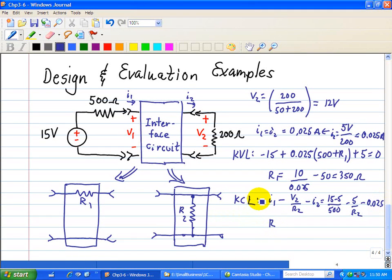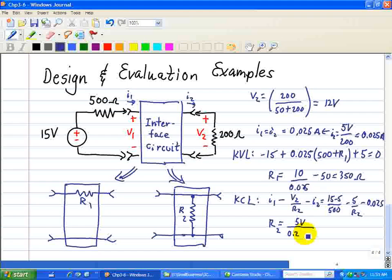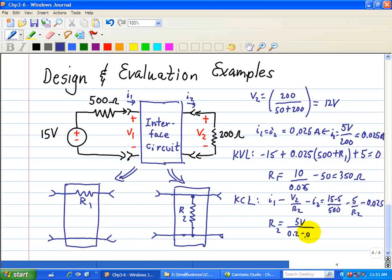Now we solve for R2, and we have 5 volts divided by 0.2, that's due to this term here, minus 0.025, which equals 28.57 ohms. You can see that the resistor R2 is much smaller than the resistor R1.